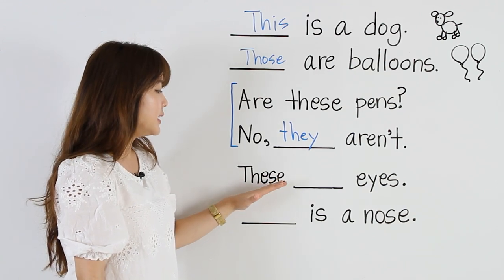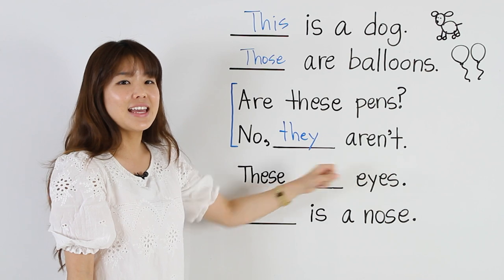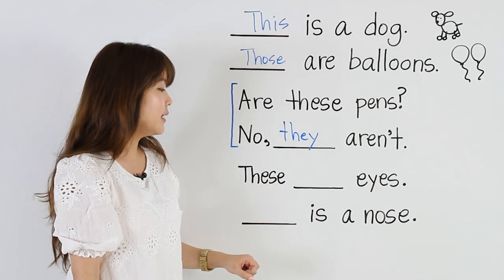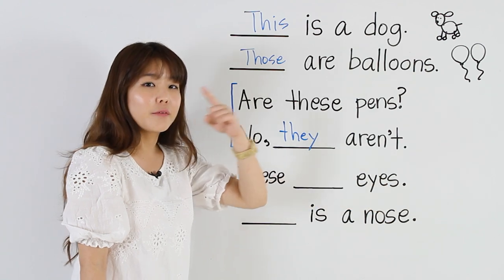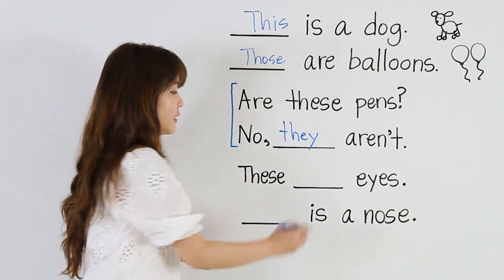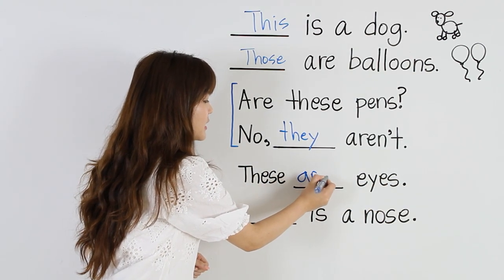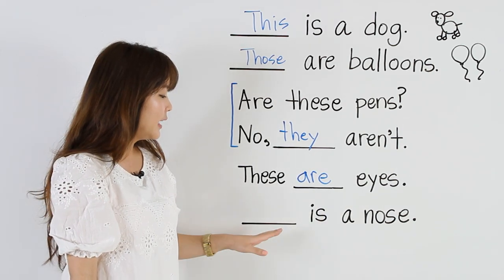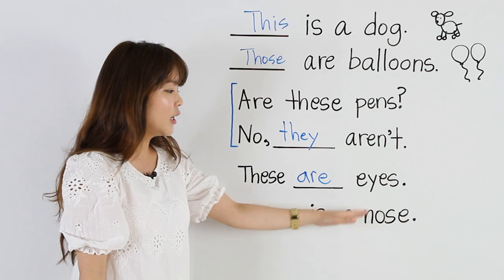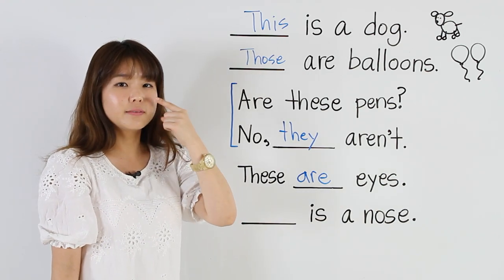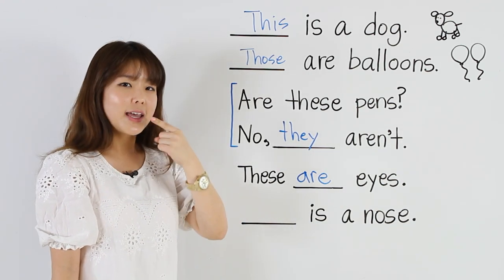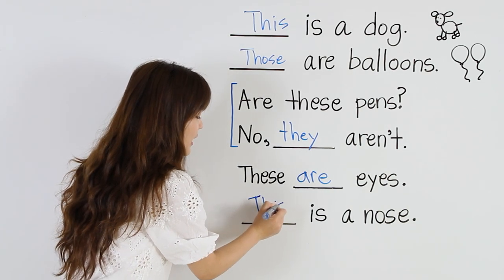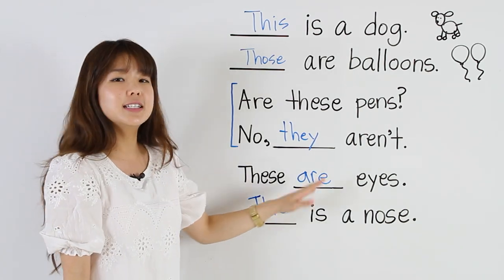The next one: 'these eyes.' We need a be-verb. There's more than one — there are two eyes. So, 'These are eyes.' And here is a nose — one nose, and it's close. So I have to say 'this': 'This is a nose.'